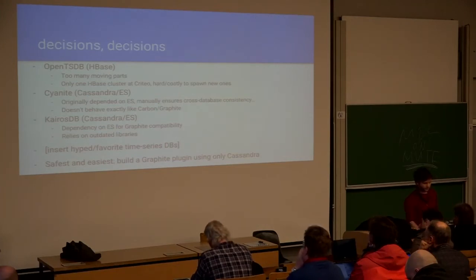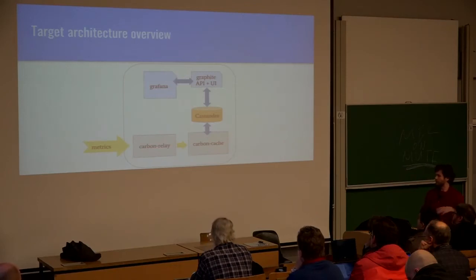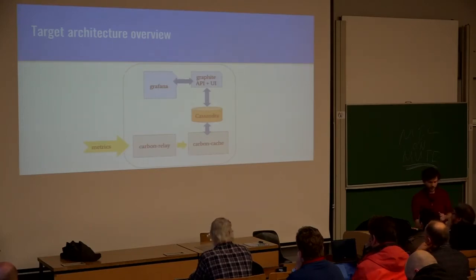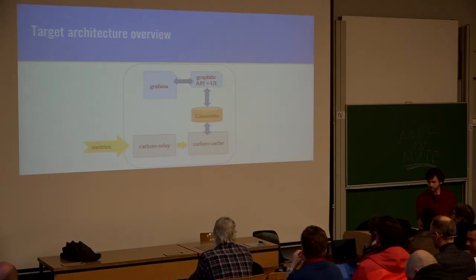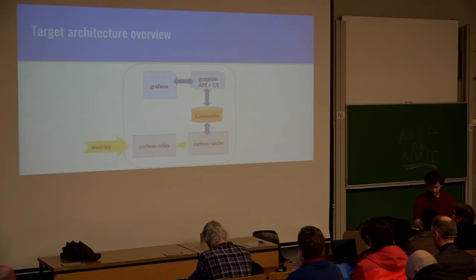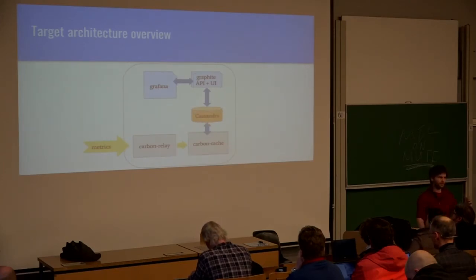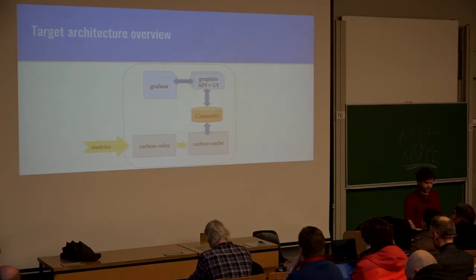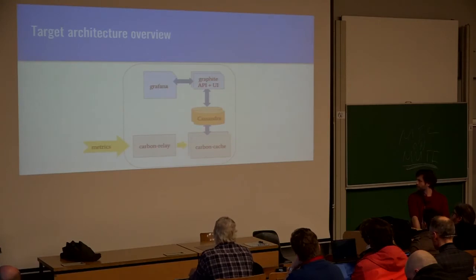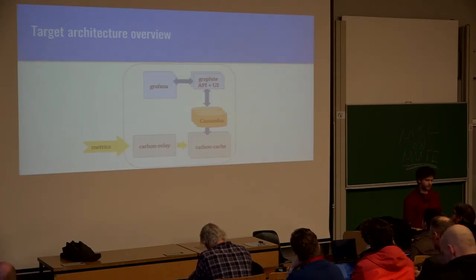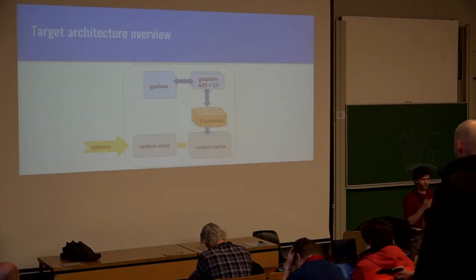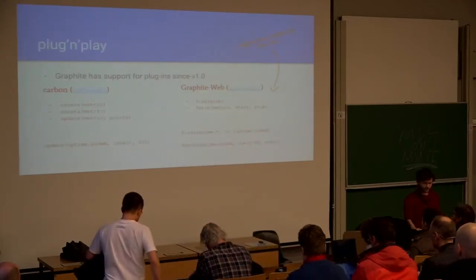The goal was to have Carbon receive metrics, write them to Cassandra, and have Graphite-Web read from Cassandra. The idea is that once any component becomes overloaded, you just increase the number of instances without having to do anything complex. If you need more UI because a lot of people have connected, you can just add one more Graphite-Web instance, or add a Cassandra node, or another Carbon cache. For the operator, you just add a machine and that's it — no weekly rebalancing.